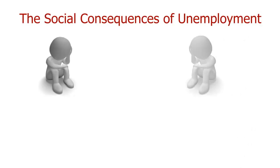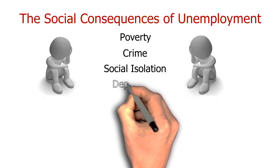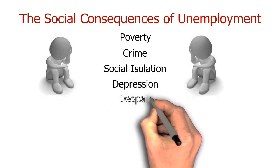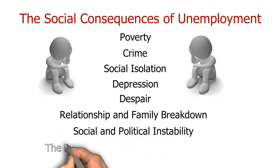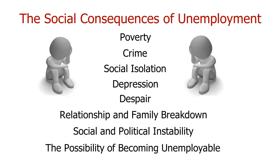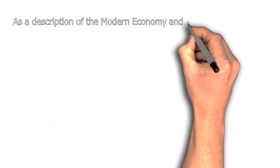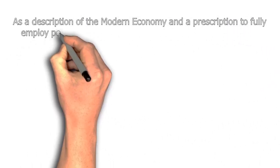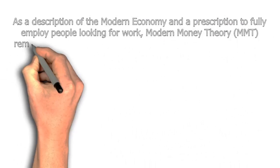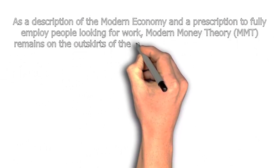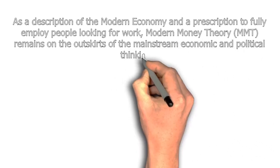The job guarantee program should not only be viewed from an economic perspective. The social consequences of unemployment include poverty, crime, social isolation, depression, despair, relationship and family breakdowns and social and political instability. It has also been shown that the longer a person remains unemployed, the higher the chances they will become unemployable. As a description of the modern economy and a prescription to fully employ people looking for work, modern monetary theory remains on the outskirts of mainstream economic and political thinking.